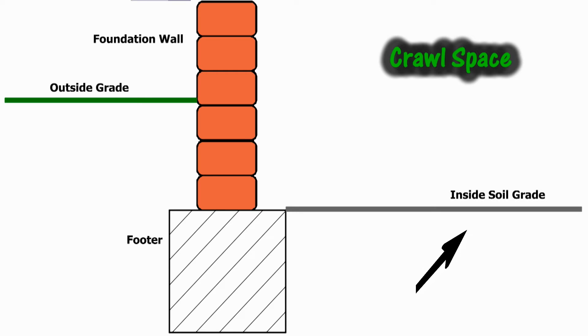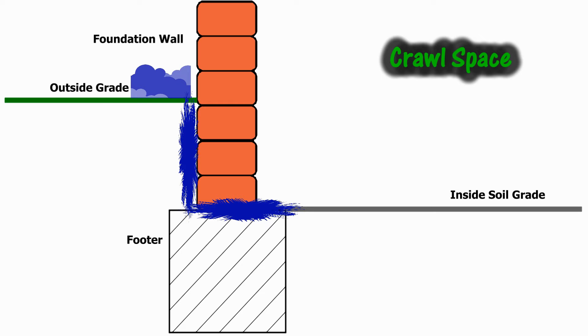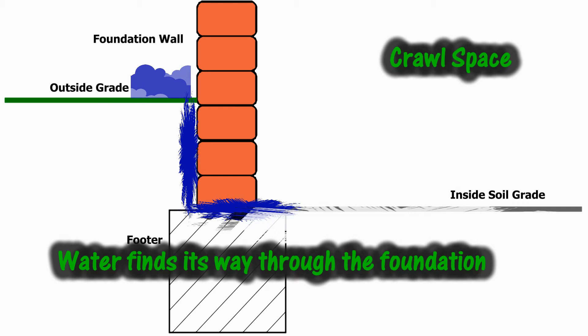The inside grade is the level of soil inside the crawl space. As it begins to rain, water will pool up alongside of the foundation wall. It finds its way to the footer and slowly seeps into the crawl space.